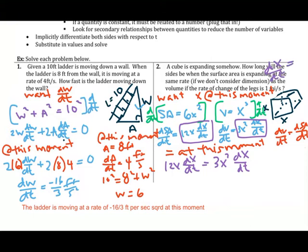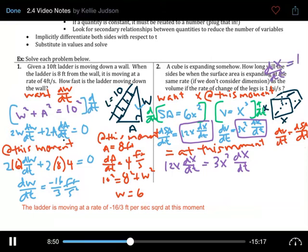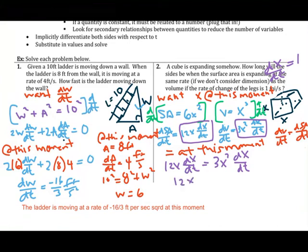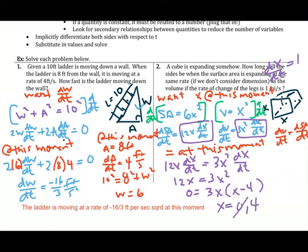We can either plug in dx/dt equals 1 or divide both sides by dx/dt. Either way, we get 12x equals 3x squared. Moving everything to one side gives 0 equals 3x times (x minus 4), so x equals 0 (which doesn't make sense) or x equals 4. The side length is 4 meters at the moment in question.